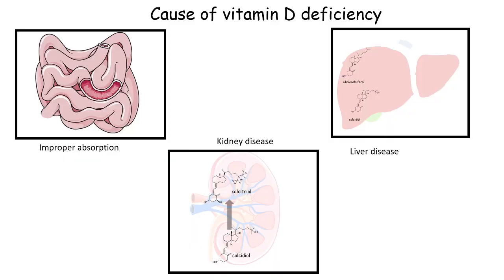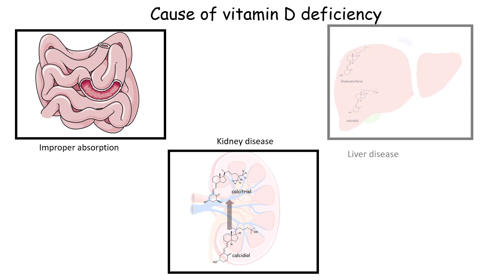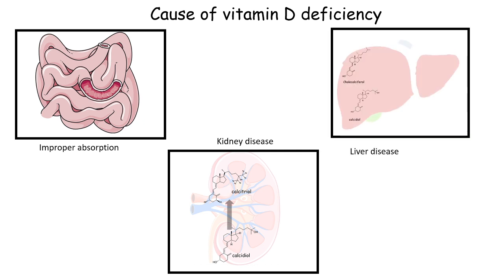Causes of vitamin deficiency include improper absorption in the intestine. In case of kidney disease, calcidiol could not be converted to calcitriol, and that's why active form of vitamin D3 is not available in the blood. In case of liver disease, cholecalciferol cannot be converted into calcidiol. All these things result in vitamin D deficiency and improper calcium homeostasis, which might eventually increase the risk of bone disease and risk of fracture.